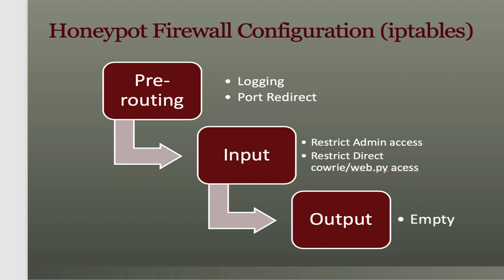For the input table, we don't restrict a lot — it's a honeypot after all, we want inbound connections. But we do restrict access to the administrative SSH port. After you install the honeypot, SSH will listen on port 12222. First, we free up port 22, which is now used by Cowrie, and we also move SSH out of the target port range. We restrict access to that port to your internal network — during setup you can whitelist certain IP addresses. Output from the honeypot is unrestricted, so Cowrie can download malware.